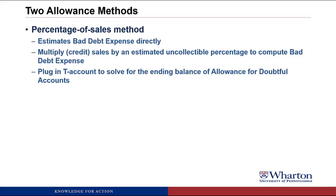This method estimates bad debt expense directly. The way you calculate bad debt expense is you multiply either total sales, or if you have it, credit sales, by an estimated uncollectible percentage to compute bad debt expense. You take all of your credit sales, estimate what percent of those you're never going to collect in cash — that's going to be your bad debt expense — and plug it into the T account to solve for the ending balance of allowance for doubtful accounts.